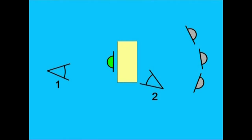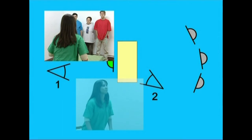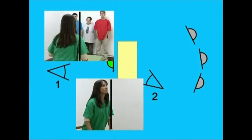Kampoaldeko eta barrualdeko angelu kontrajarrietatik ere filma dezakegu altxatze bat. Lehenengo planoa hartzeko, kamera kampoaldeko angelu kontrajarrian kokatuko dugu, protagonistaren atze aldean. Alako batean, aktorea altxatu egiten da. Bigarren planoa hartzeko, kamera barrualdeko angelu kontrajarrian kokatuko dugu, eta protagonistak mugimendu osoa errepikatzen du. Muntatzerakoan, lehenengo planoan mugimenduaren lehen erena erakutsiko dugu, eta bigarrenean beste bi erenak. Bi planoetan aktorea kuadroaren alde berean eduki dugu.